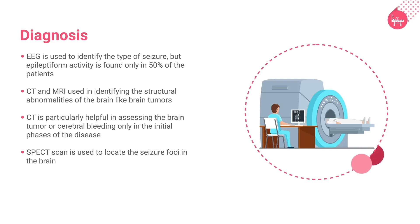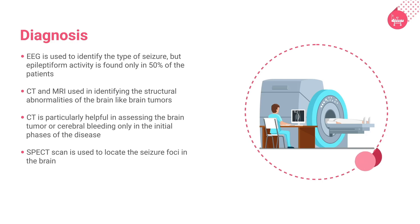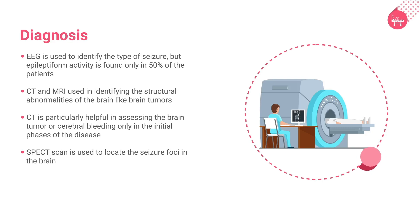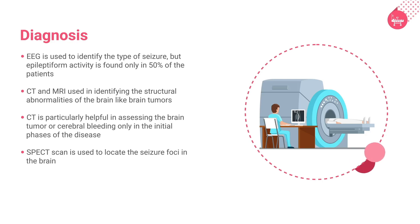CT and MRI are used in identifying the structural abnormalities of the brain, like brain tumors. CT is particularly helpful in assessing brain tumors or cerebral bleeding, only in the initial phases of the disease. SPECT scan, also known as single photon emission computed tomography, is a brain scan used to locate the seizure foci in the brain.